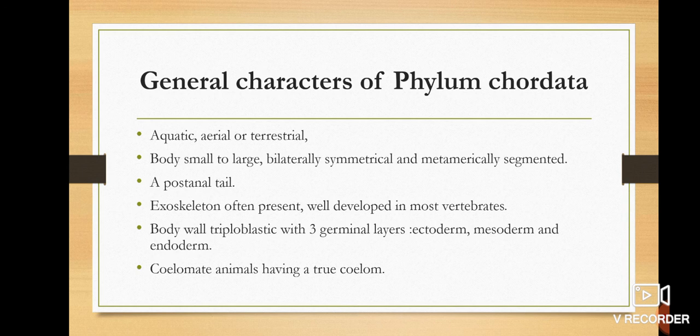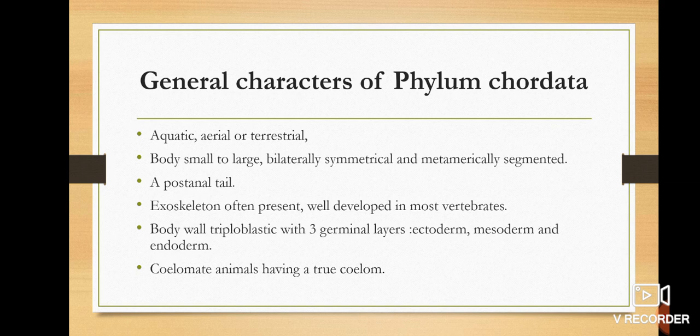Most of the vertebrates have a well-developed exoskeleton which provides body support. If we talk about the body wall, it is triploblastic — all animals in Phylum Chordata have a triploblastic body wall. Next, the body has a true coelom. The coelom is the cavity between the body wall and the internal gut, and all animals in Phylum Chordata are coelomate animals.